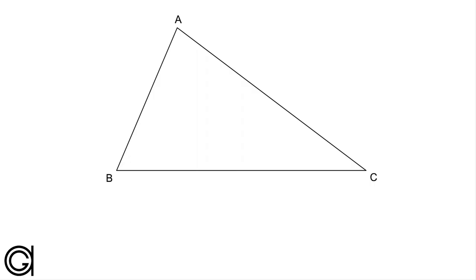Hello, today we are going to learn how to draw Euler's line on a given triangle. Euler's line on a triangle is a special line which passes through several of the notable points of a triangle, such as the orthocenter point, the circumcenter point, and the centroid point of a triangle.